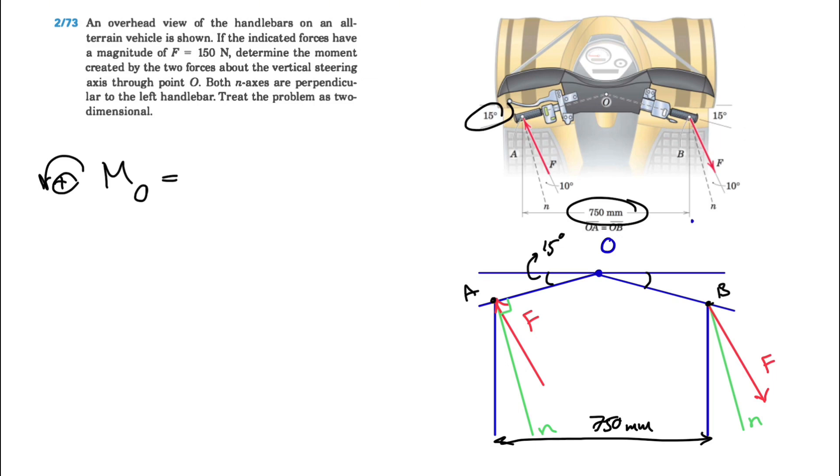If we resolve the forces along the N-axis and perpendicular to that, the parallel component to the handlebar is going to pass through O so it won't make any moment. We already know that this angle right here is 10 degrees, and the force that's going to make the moment about O is the perpendicular force along the N-axis, which is F cosine of 10 degrees.